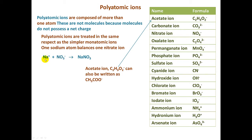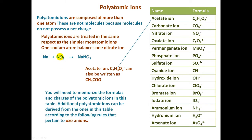Let's take a look at this. Here I have the formula for sodium nitrate. Remember, sodium forms sodium ions with a plus-one charge. The nitrate, which we find right here on the table, has a negative charge. So when we combine a positive charge with a negative charge, this is the formula. We have one sodium and one nitrate, so we have one sodium ion balancing one nitrate ion.